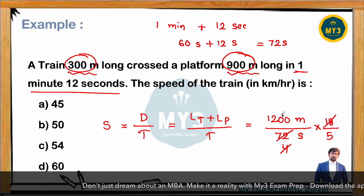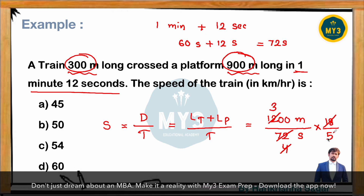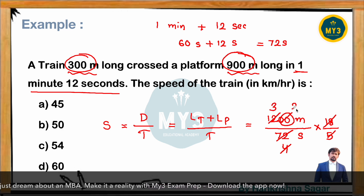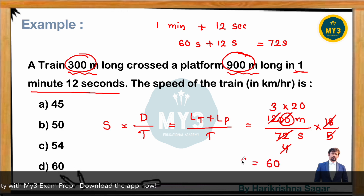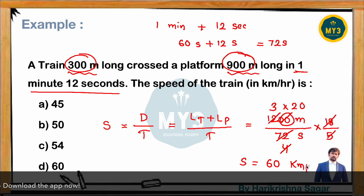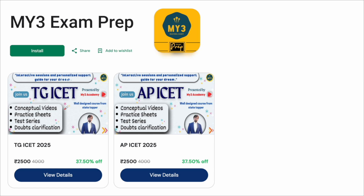Simplifying: 1200/72 × 18/5 = 60 km/h. So the speed of the train is 60 km/h, which is available as option T. You can mark that as the answer.